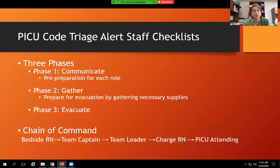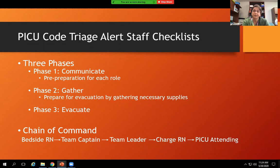The PICU code triage alert staff checklist covers every role — bedside nurse, team captain, team leader, charge nurse, and PICU attending — across three phases. Phase one is communication: pre-preparation, ensuring the patient has labels and an armband. Phase two is gather: preparing for evacuation by collecting all necessary supplies. Phase three is evacuate. The chain of command runs from bedside nurse up to the PICU attending, who also reports to and receives expectations from the incident commander.